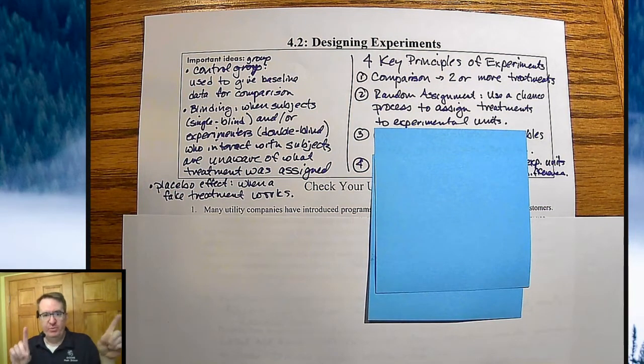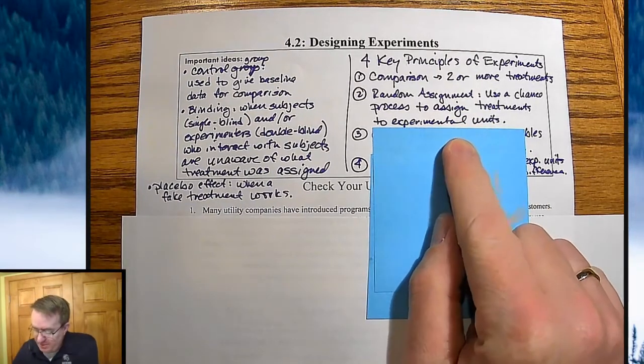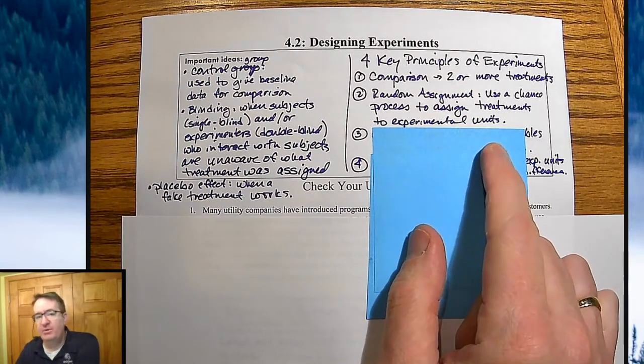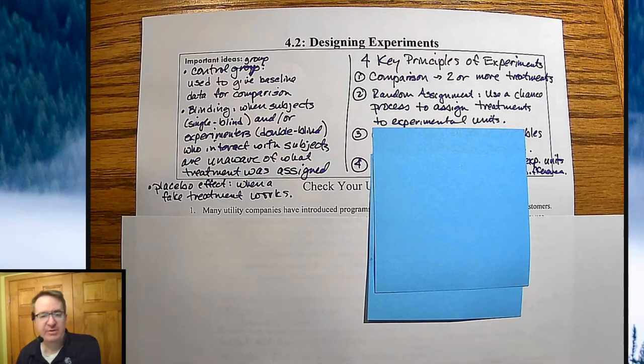The second part, random assignment. Everybody has to have an equal chance to go into either group, or if you have more than two groups, all three groups. So there's some sort of random assignment. Everybody gets numbered, we pick 50 numbers, they go in this group, the next 50 numbers go in this group, everybody else goes in the last group, that type of thing.